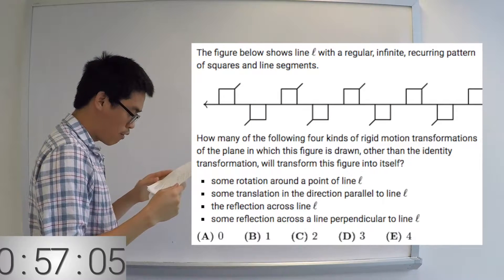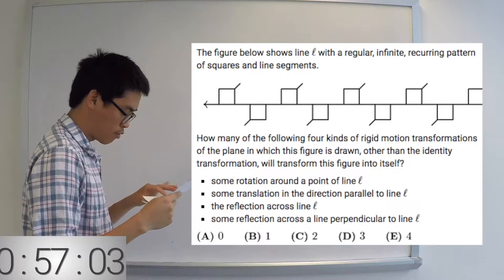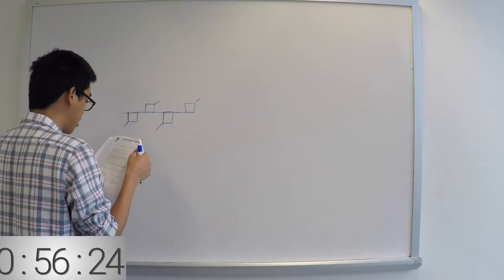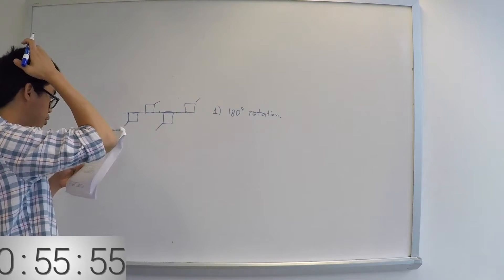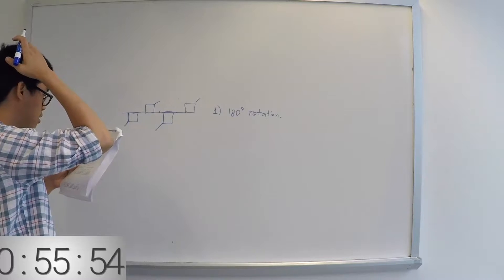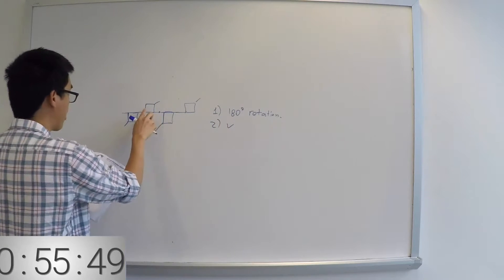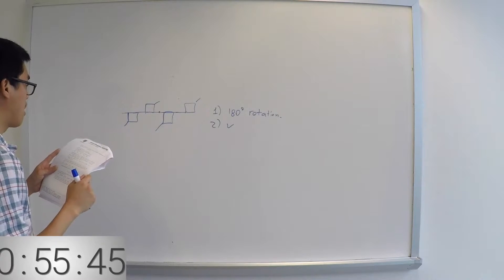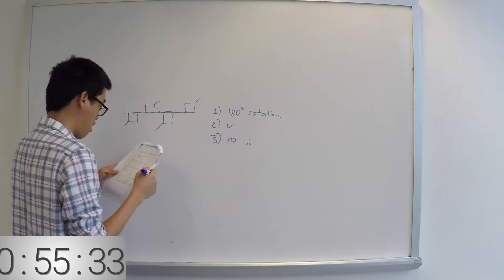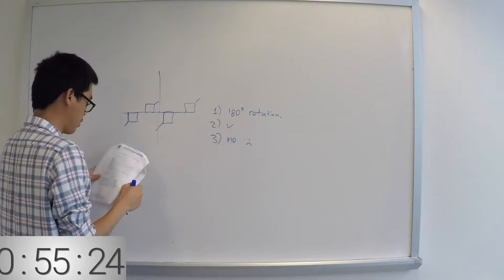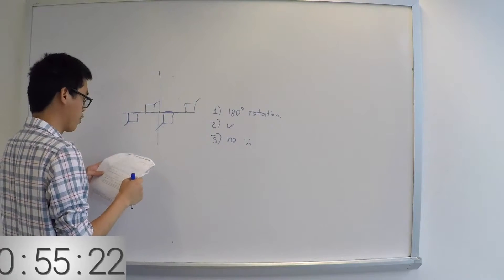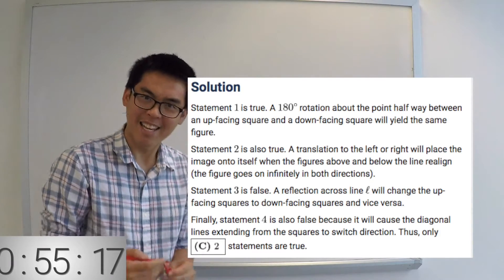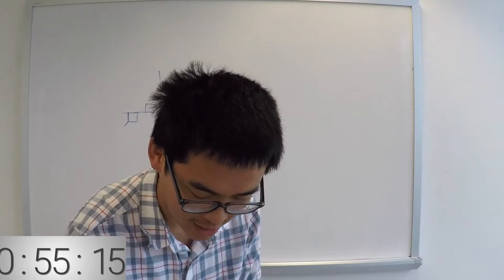How many of the four rigid motion transformations work? Some rotation — that's one. Some translation — that's two. If parallel, that's good. Reflection across — reflection is no good. So just two. And it's getting easier, so hopefully we can finish in time.